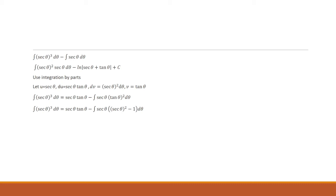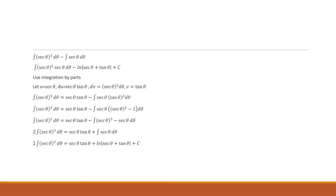I'm going to substitute tangent squared equals secant squared minus 1, then distribute out the secant, so inside the integral we get secant cubed minus secant. Notice I can move the integral of secant cubed to the left side, giving me two copies of that integral. The minus negative secant becomes positive secant, and we know the integral of secant is ln of secant plus tangent. So I divide both sides by 2 to isolate the integral of secant cubed.